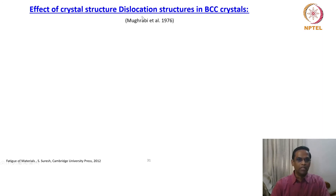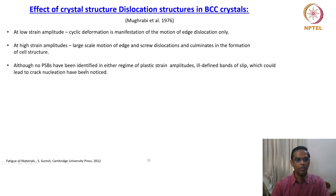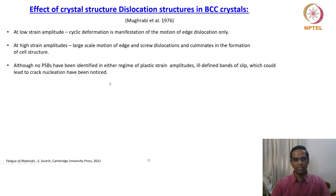Now let us discuss the effect of crystal structure and dislocation structures in a BCC crystal. At low strain amplitude, cyclic deformation is a manifestation of motion of edge dislocations only. At high strain amplitudes, large-scale motion of edge and screw dislocations culminates in the formation of cell structure. This is in contrast to what we have seen in FCC crystals. Although no PSBs have been identified at either region of plastic strain amplitudes in BCC crystals, ill-defined bands of slip which could lead to crack nucleation have been noticed.